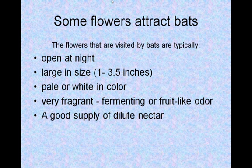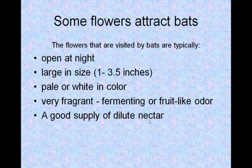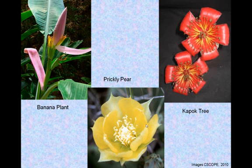Some flowers attract bats. The flowers that are visited by bats are typically open at night, large in size, pale or white in color, very fragrant, fermenting or fruit-like odor, and a good supply of dilute nectar. Here are some examples of the flowers visited by bats. We have the banana plant, the prickly pear, and the capoc tree flower.